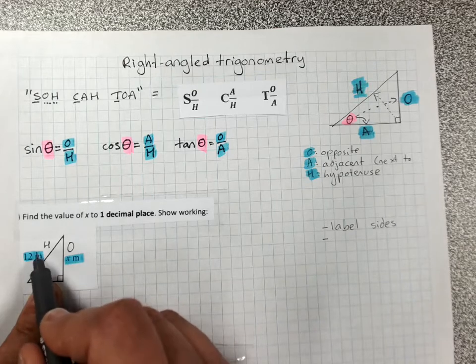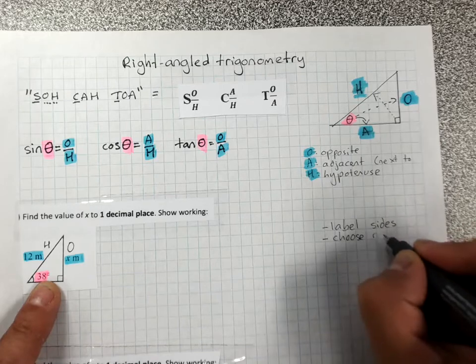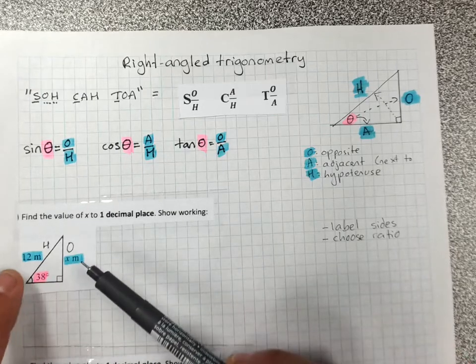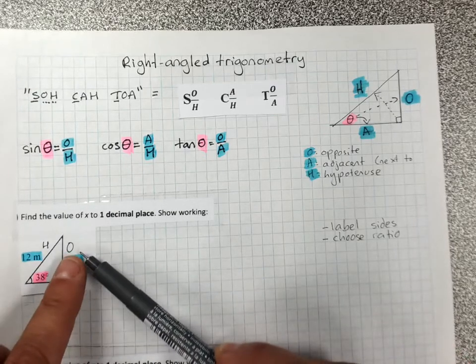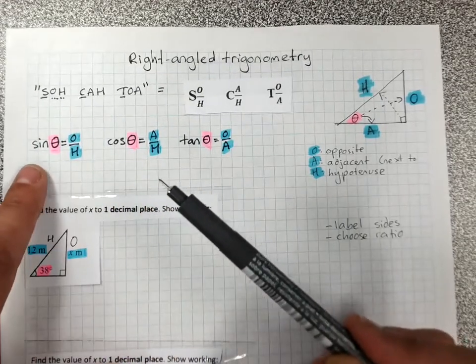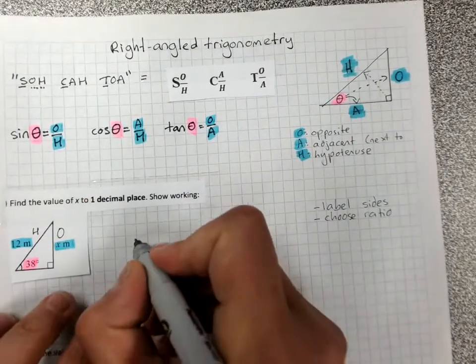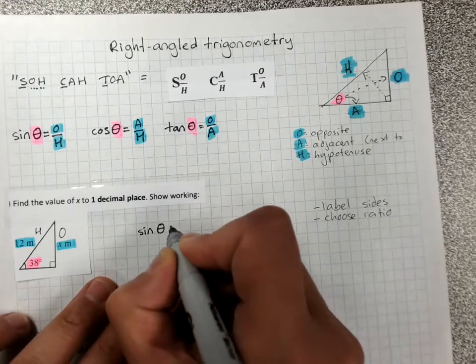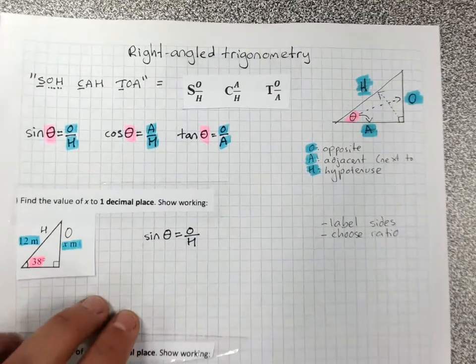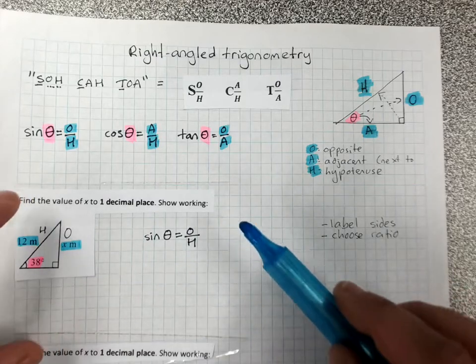Now, based on which sides we've got, we're going to choose the ratio. Look up our ratios, which we've color coded. The blue sides are O and H. Which ratio has O and H? It's sine. So we're going to write the sine ratio exactly like that. Sine theta equals opposite over hypotenuse. And we're taking this slowly and carefully so we get it right. It's okay to take 10 minutes on one question.